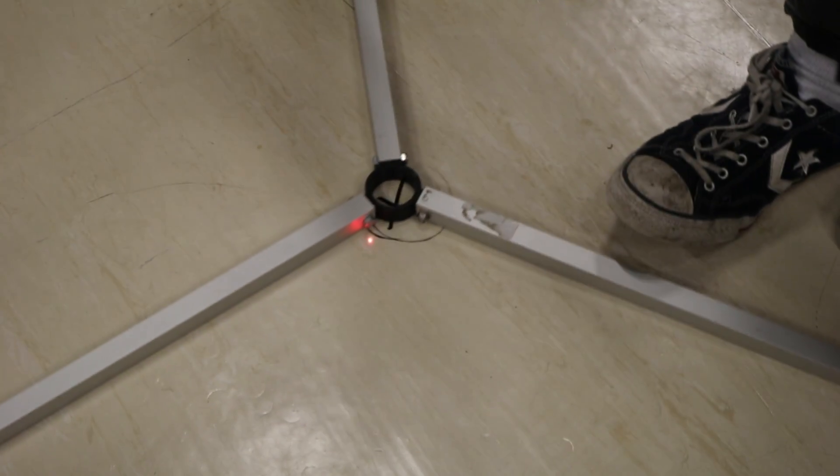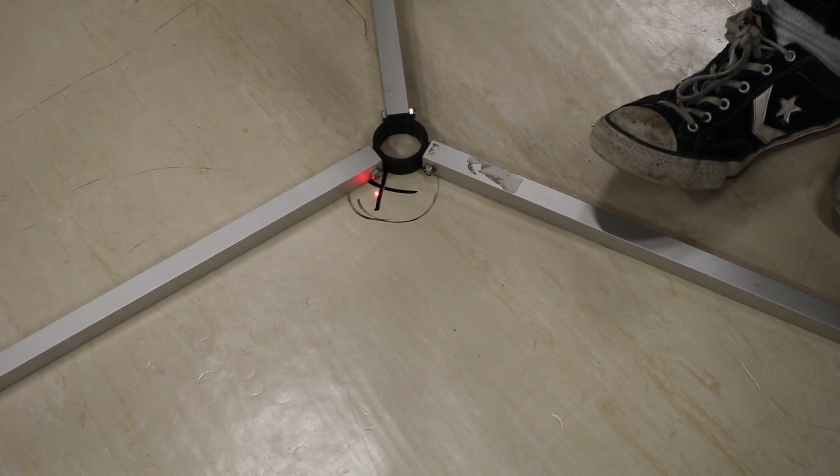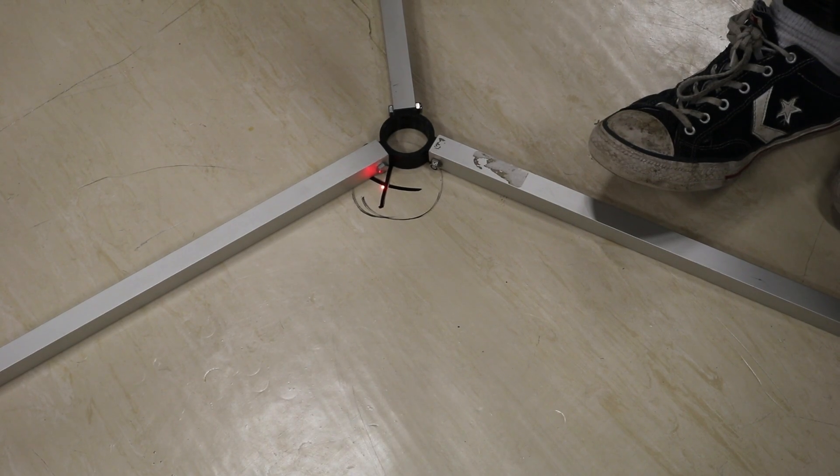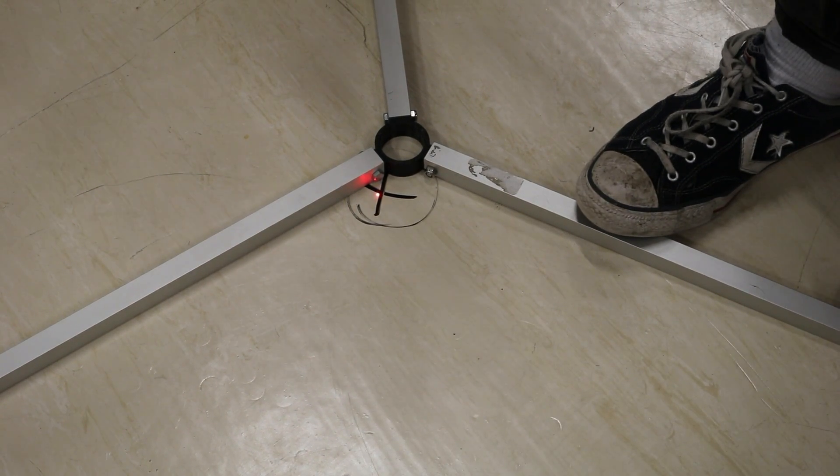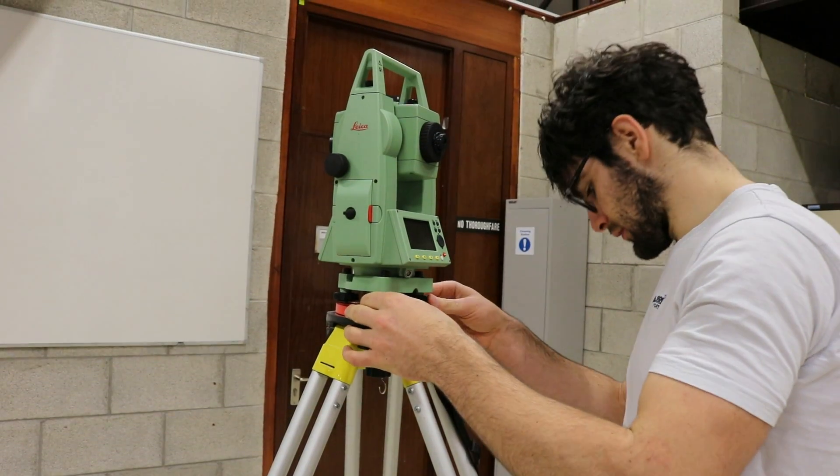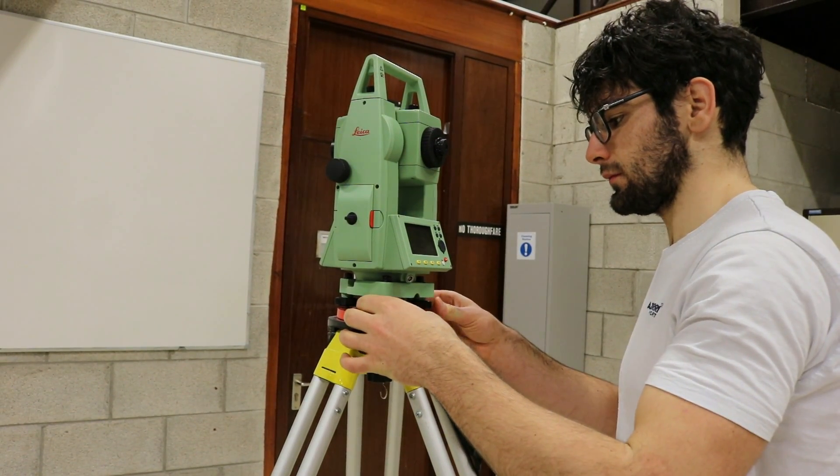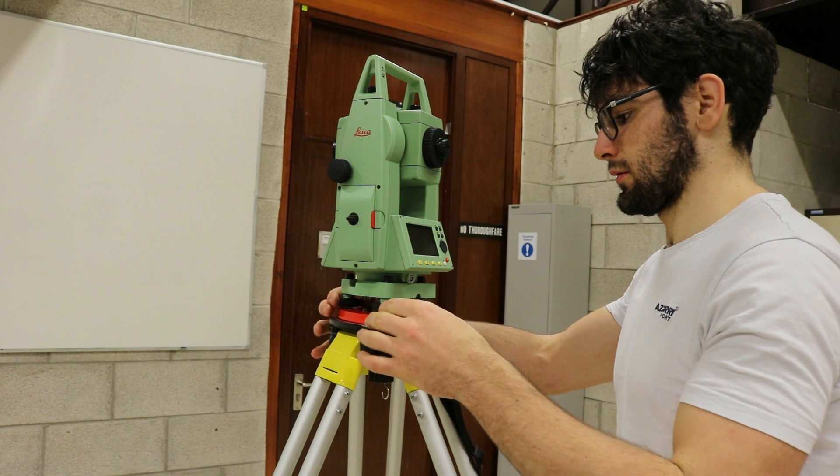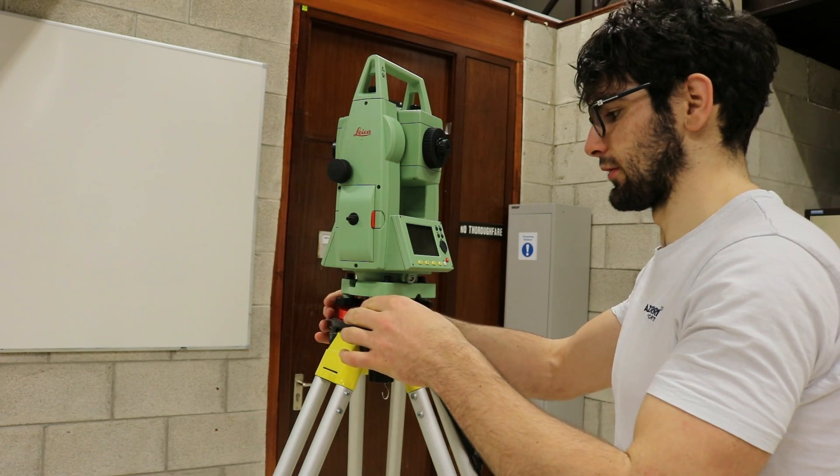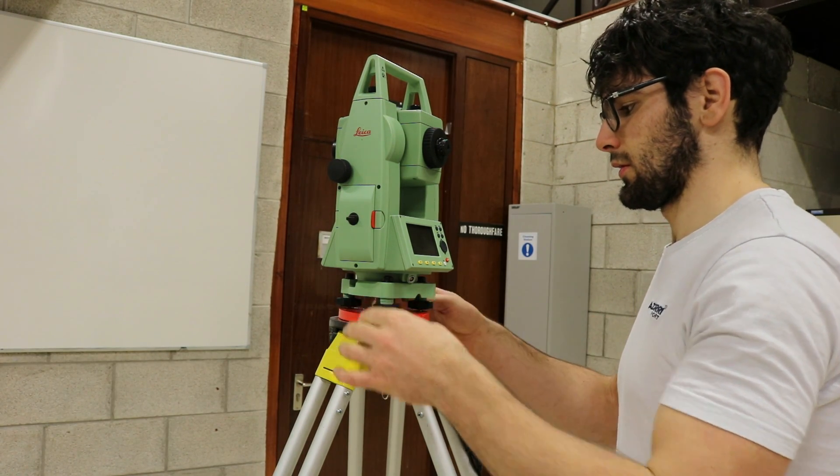If this is not the case, then loosen the mounting screw and gently slide the total station until the laser is directly over the known coordinate. Re-level the instrument and tighten the mounting screw. Repeat these steps until the instrument is both level and directly over the known point.